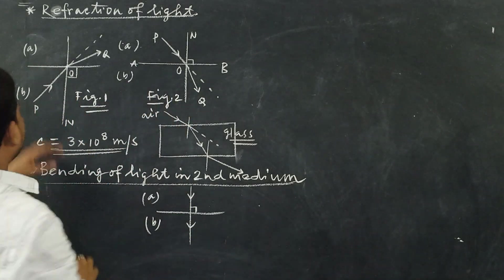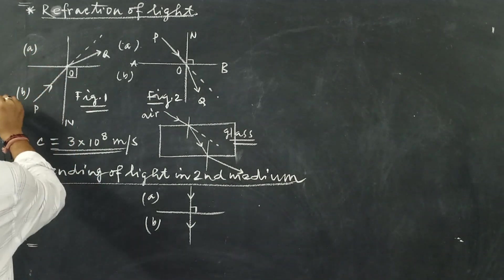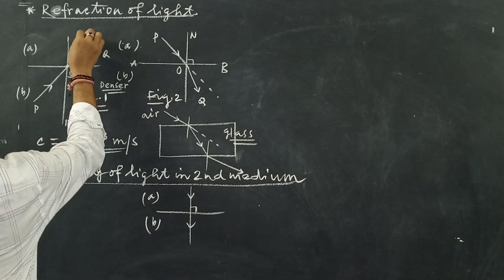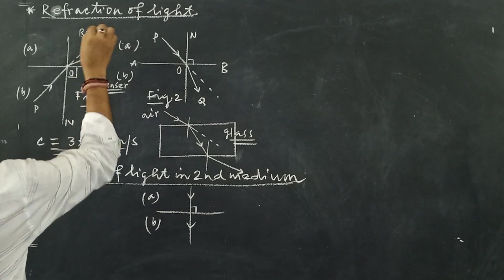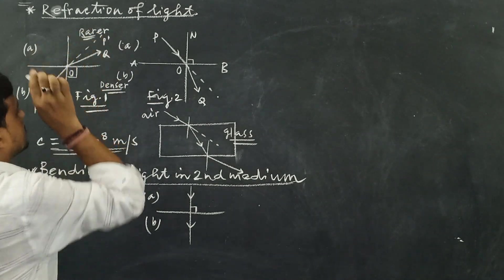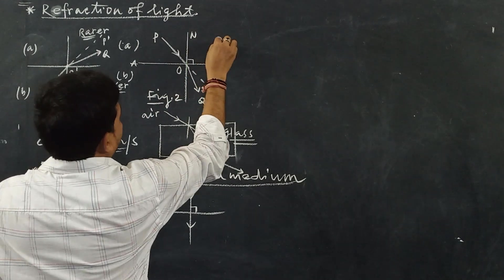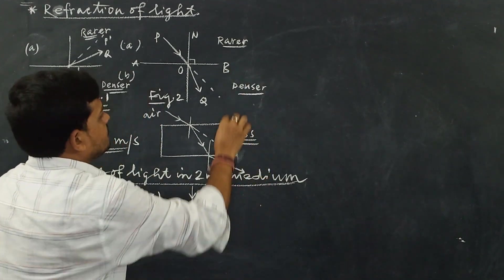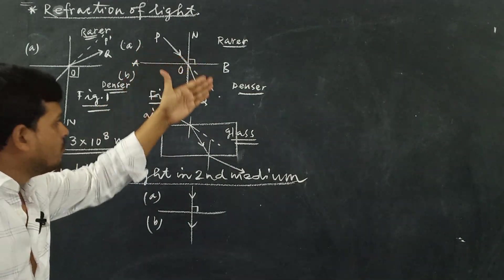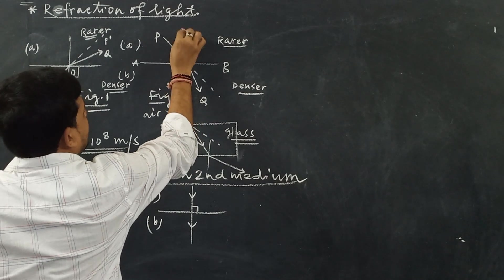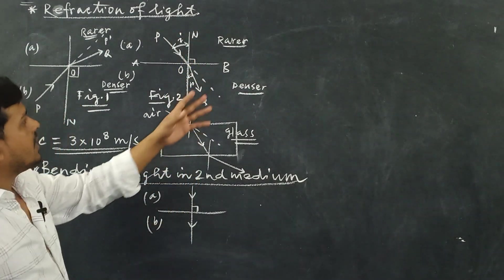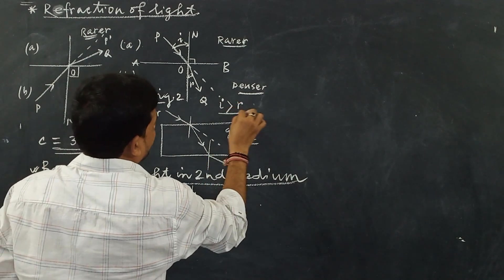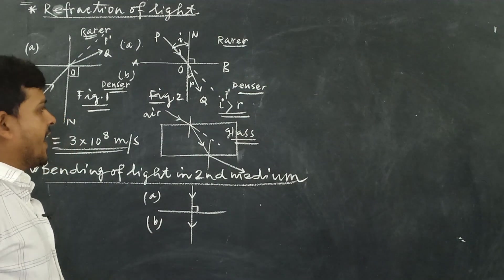In figure one, with medium A and medium B — here B is the optically denser medium and A is the rarer medium. When light goes from rarer to denser medium, the light ray bends towards the normal. The angle of incidence I and angle of refraction R: in refraction from rarer to denser medium, the angle of incidence is greater than the angle of refraction.